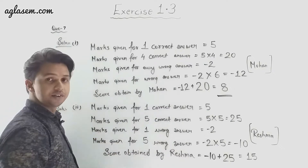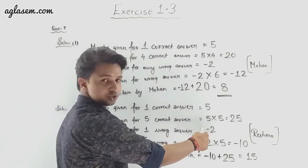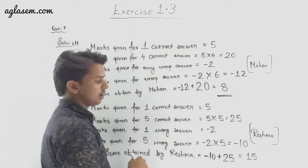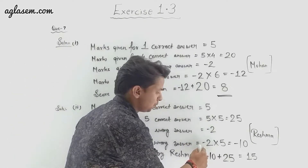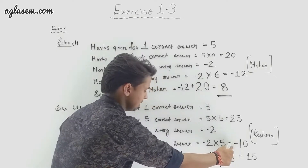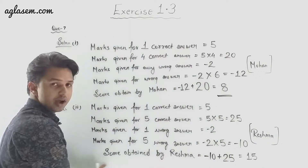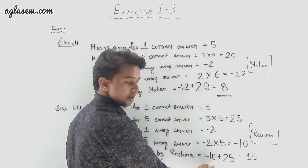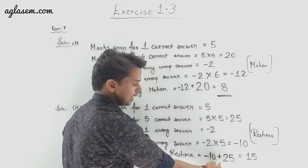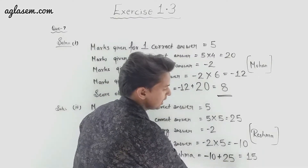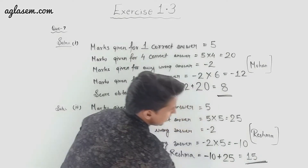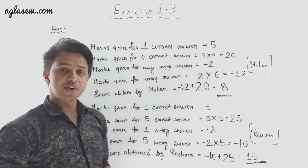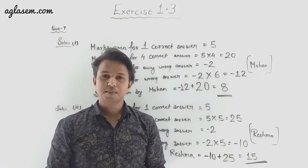Marks given for a wrong answer is minus 2, so minus 2 multiplied by 5 equals minus 10. Score obtained by Reshma is minus 10 plus 25, which gives 15. Total marks scored by Reshma is 15.